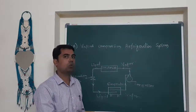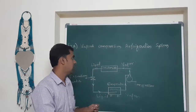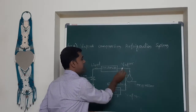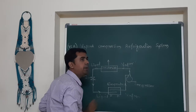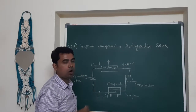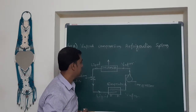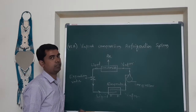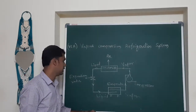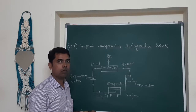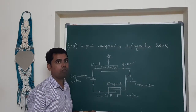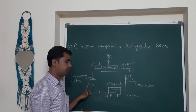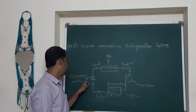The refrigerant then enters the compressor, where the vapor is compressed to high pressure. As it is compressed, it has a tendency to condense. It then enters the condenser, which is located outside the space to be cooled, where the high pressure vapor condenses and rejects latent heat of condensation.